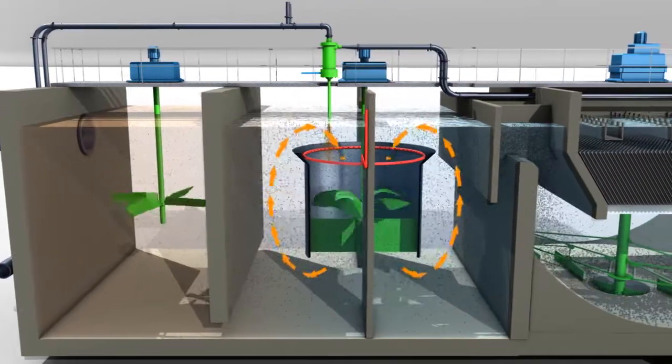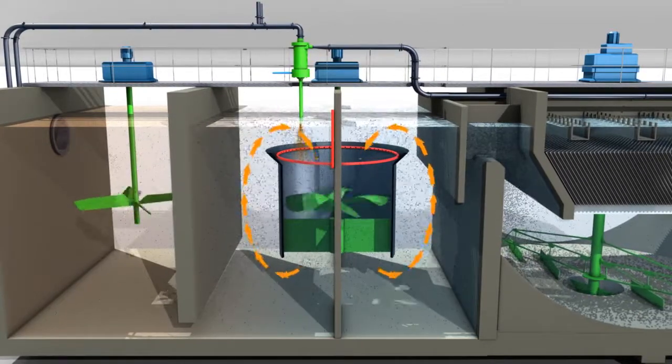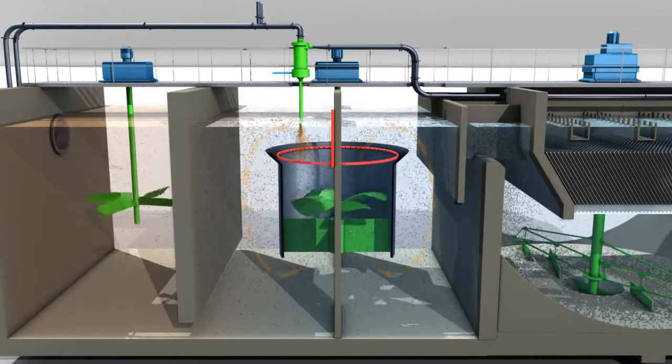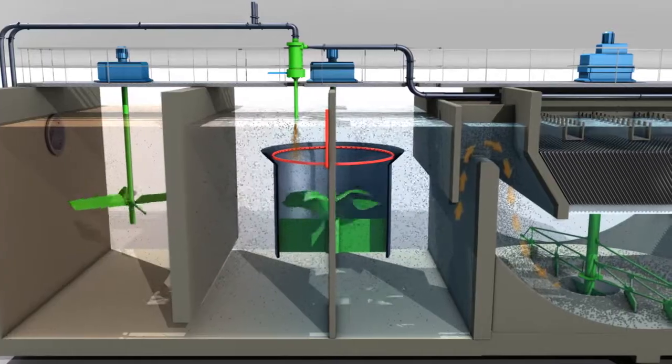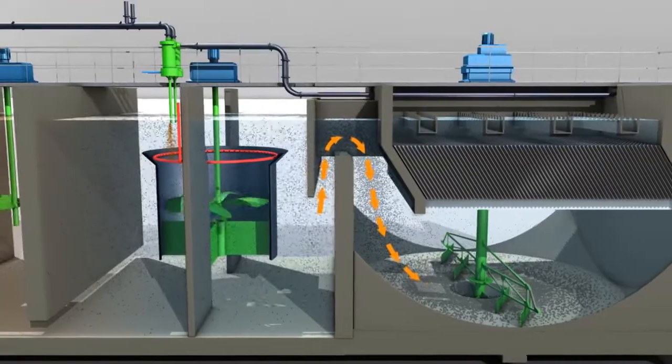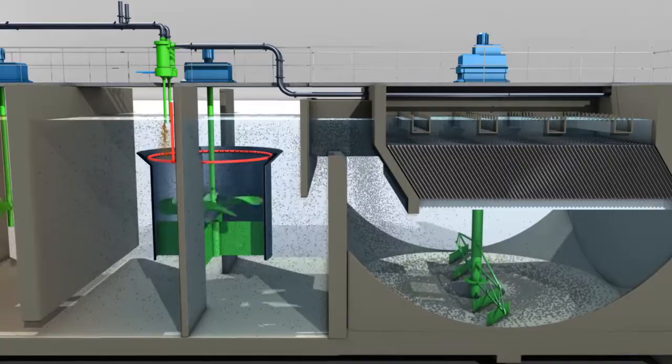Thanks to its anti-vortex baffles, the turbomix draft tube improves the hydraulic mixing and reduces the dead volumes in the basin. Hydraulic retention time in the basin is approximately 3 minutes. The fully flocculated water then passes through a series of siphoid baffles, which help to avoid the transfer of turbulence from the agitated zone into the settling tank.